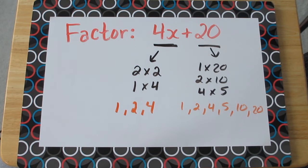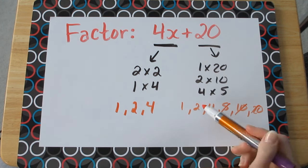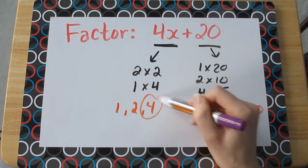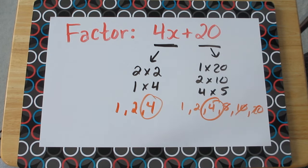So looking at this list of numbers, 5, 10, and 20 are not common to both of these sets. And we have 1 and 2 that are common, but overall 4 is the highest factor out of all of these factors. So 4 will be the common factor that we'll be using.